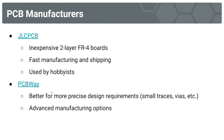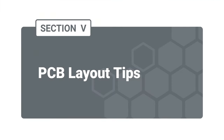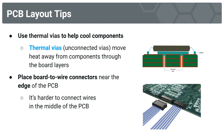Now that we've talked about manufacturers, let's move on to some tips for PCB layout. The first tip — and I'll say this one is especially important — is to use thermal vias to cool your components. Thermal vias are unconnected vias which you place strategically to move heat away from components through the board layers. Here in this diagram, we have a cross-section of the PCB with an IC seated on the top layer. This IC generates heat, and the heat is dissipated through the thermal vias across the board layers.